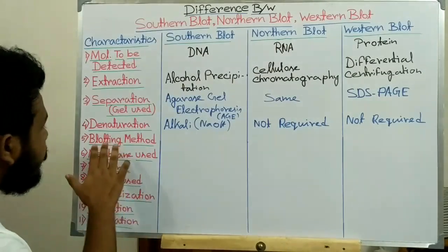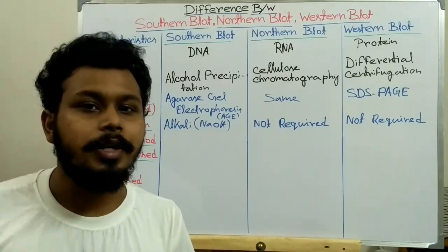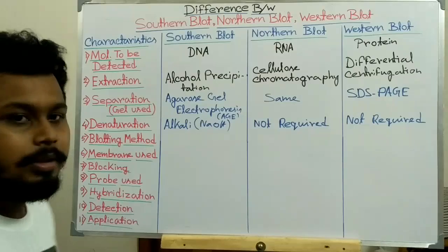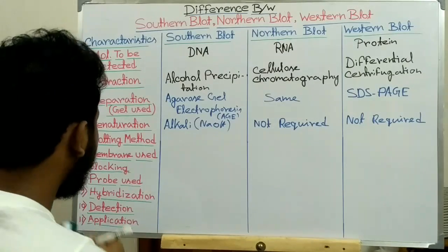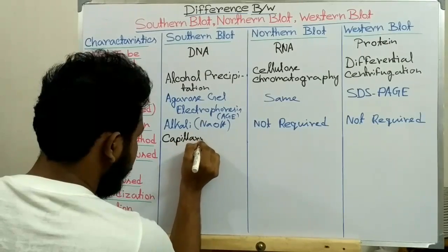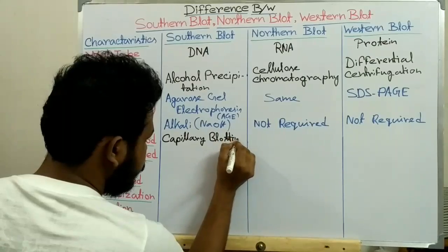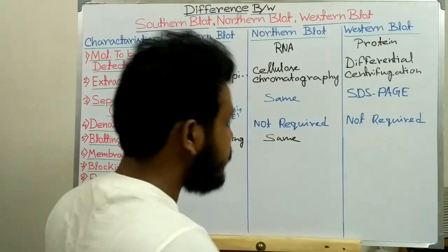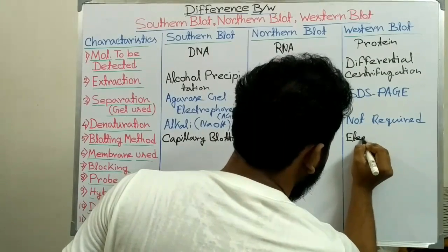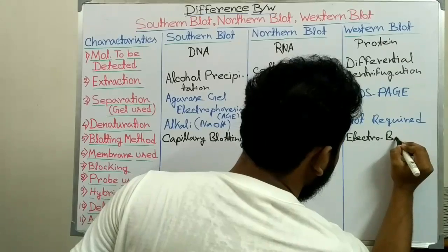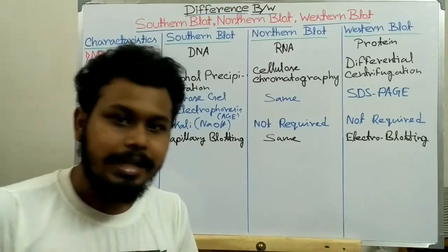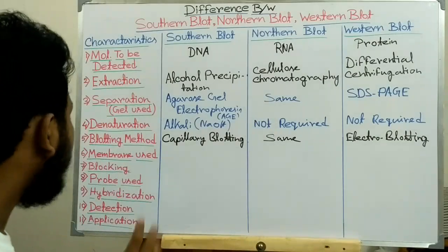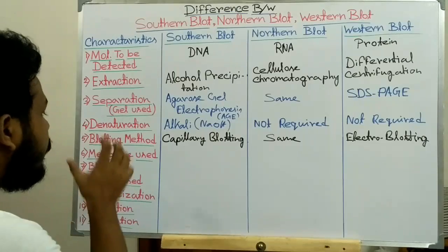The next point is the blotting method. Blotting means the transfer of biomolecules — DNA, RNA, or protein — from the electrophoretic gel to the membrane. In Southern blot, blotting is done by capillary blotting. In Northern blot, we also use capillary blotting, the same as Southern blot. In Western blot, we use electro-blotting, meaning an electric current is applied to transfer the protein molecules from the polyacrylamide gel to the membrane.